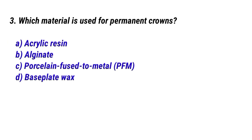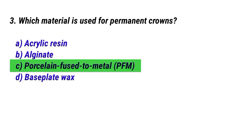Question No. 3: Which material is used for permanent crowns? The right answer is Option C: Porcelain fused to metal.